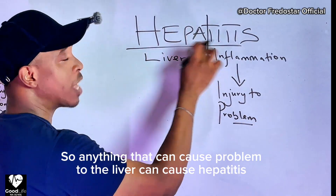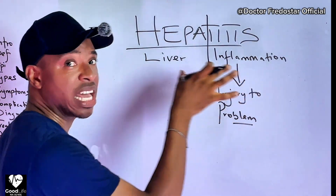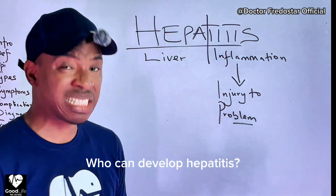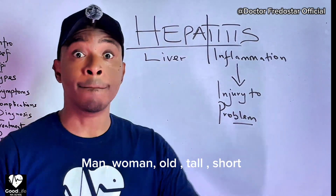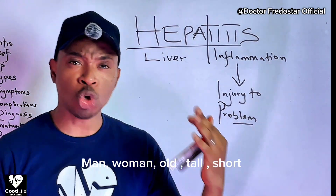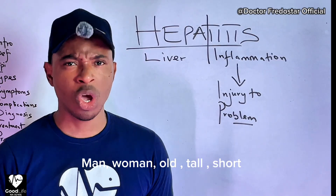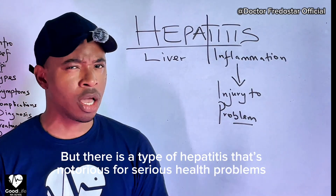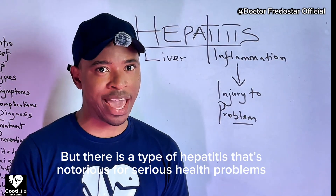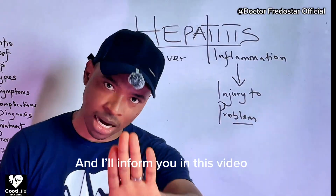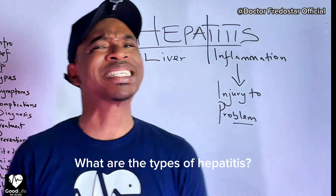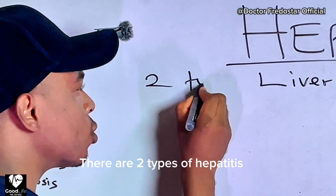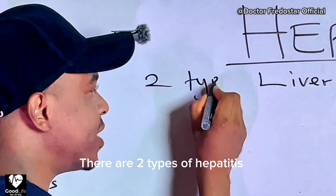So anything that can cause problem to the liver can cause hepatitis. Who can get hepatitis? Anybody — man, woman, old, tall, short. But the thing is, some types of hepatitis can cause more problem. I will tell you in this video. We have two types of hepatitis — two very important ones.